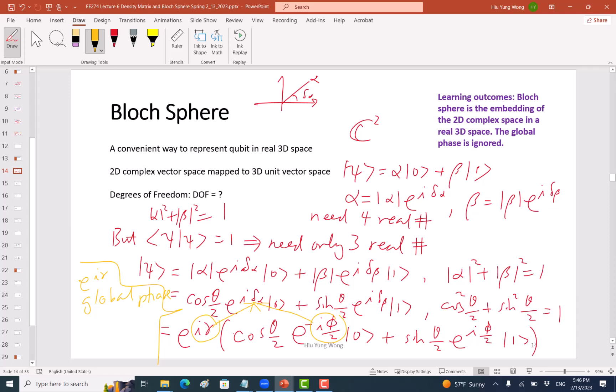It's not important because the expectation value of anything does not depend on the global phase. Now why is that? Maybe because of time, I will talk about that next time, but that is very simple because if you add a global phase e to the I gamma to the ket, you need to add e to the power negative I gamma to the bra, they get cancelled, become one. So global phase is not important for one qubit.